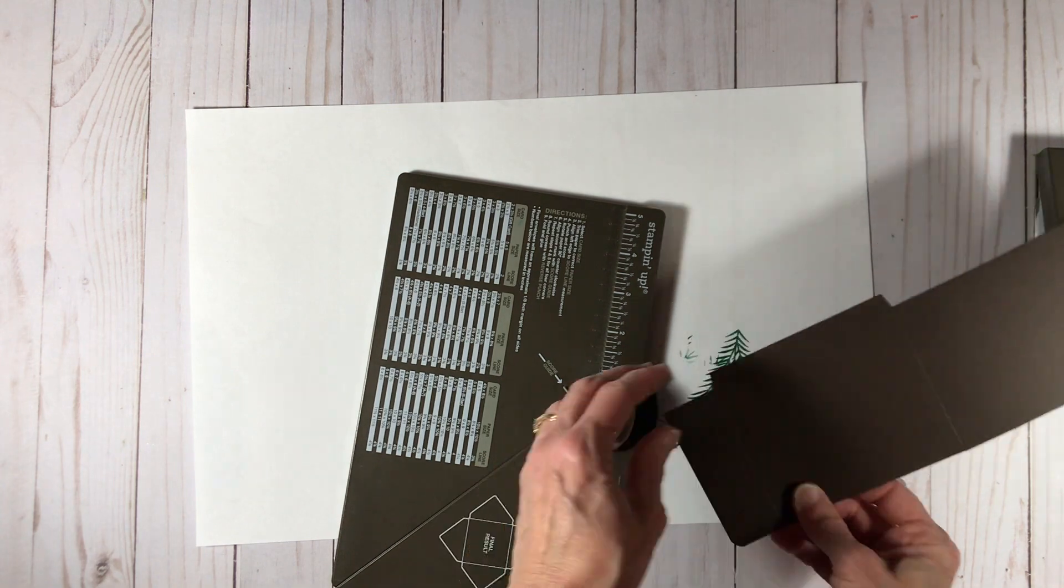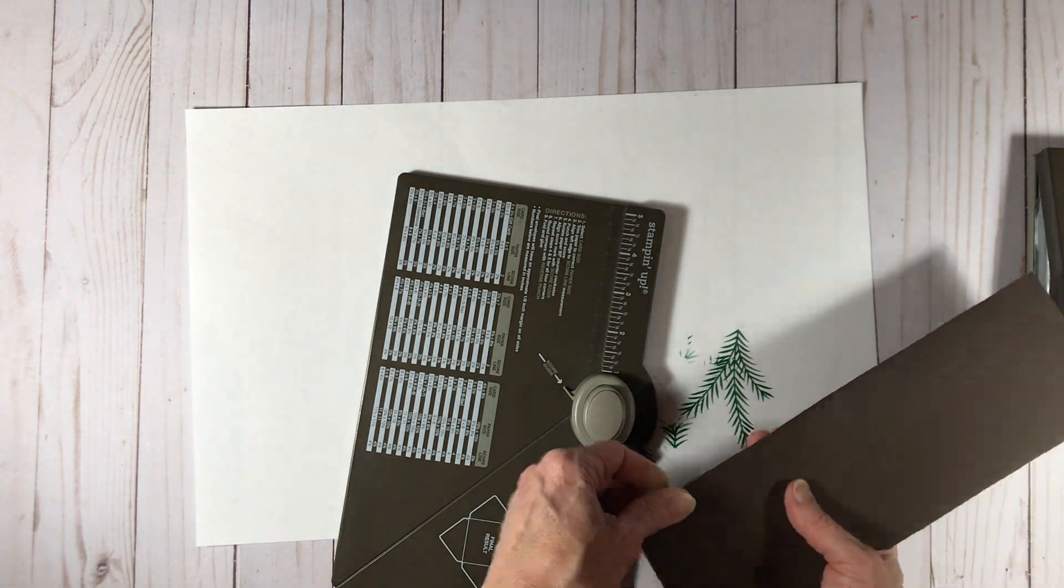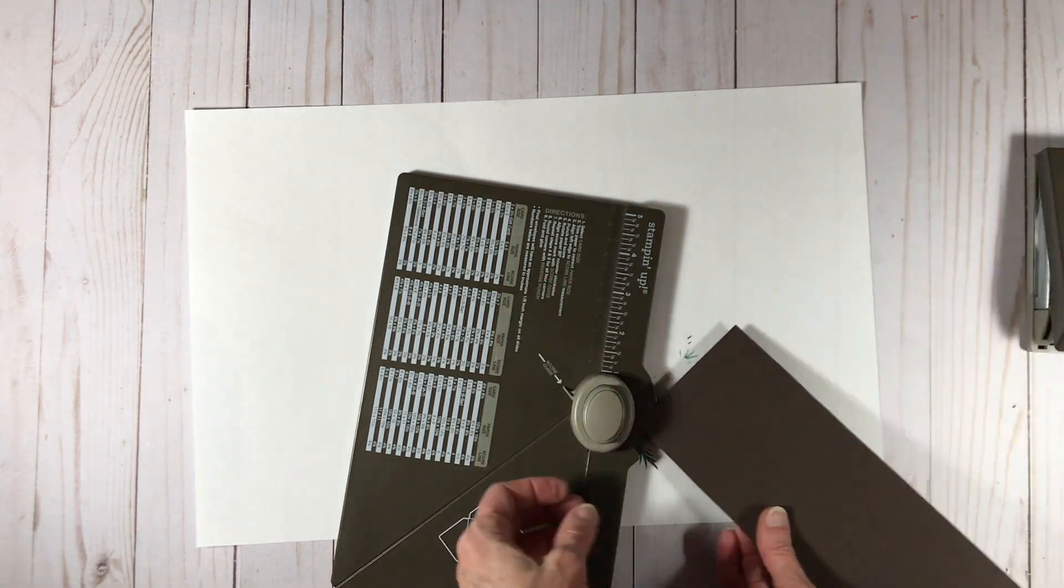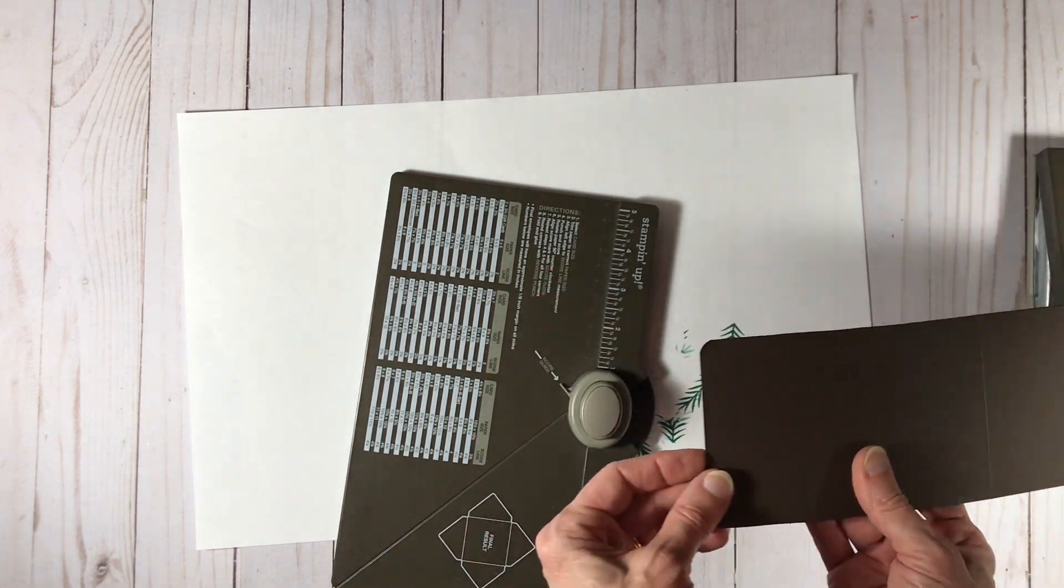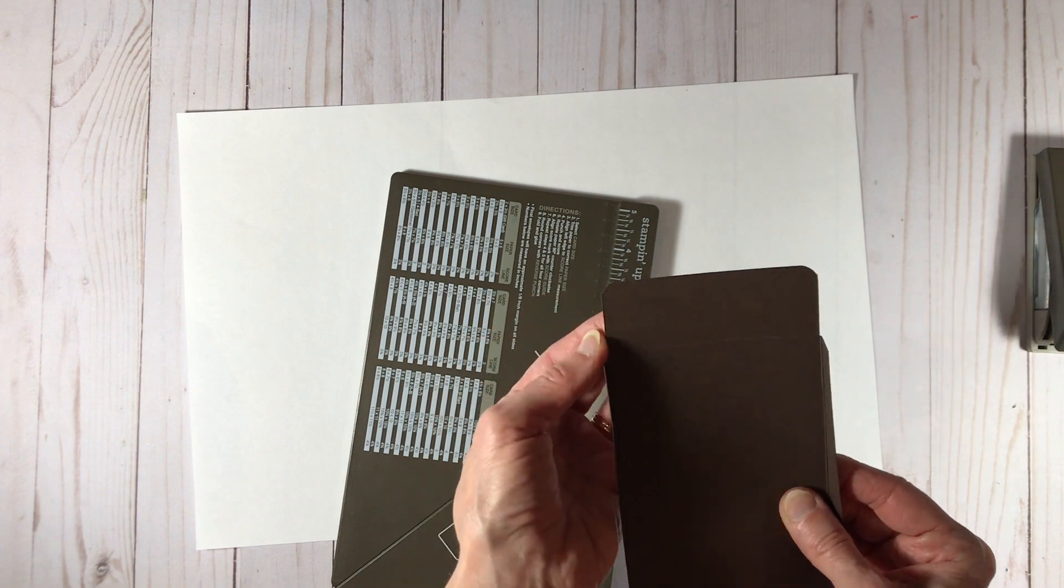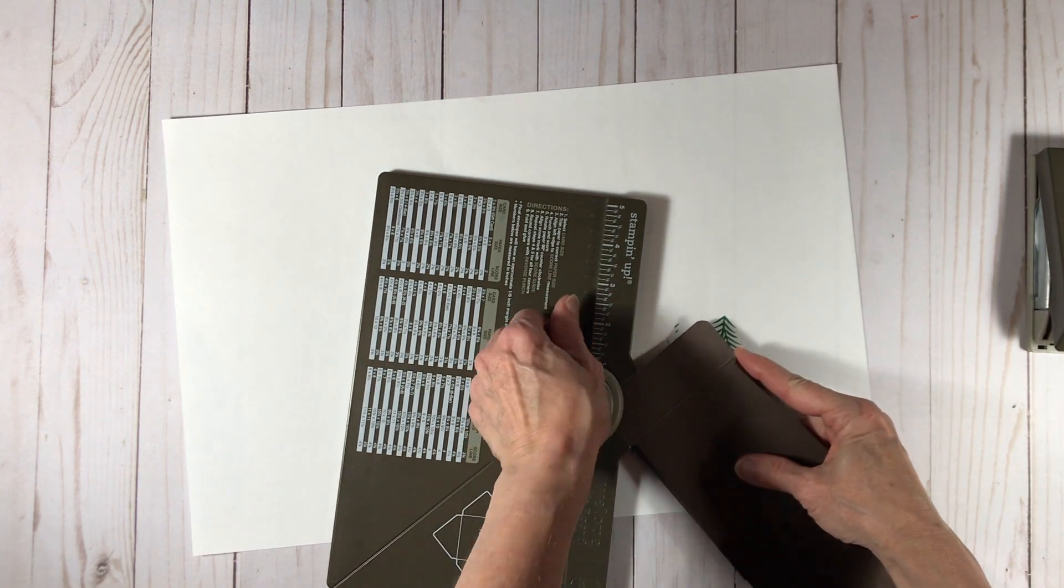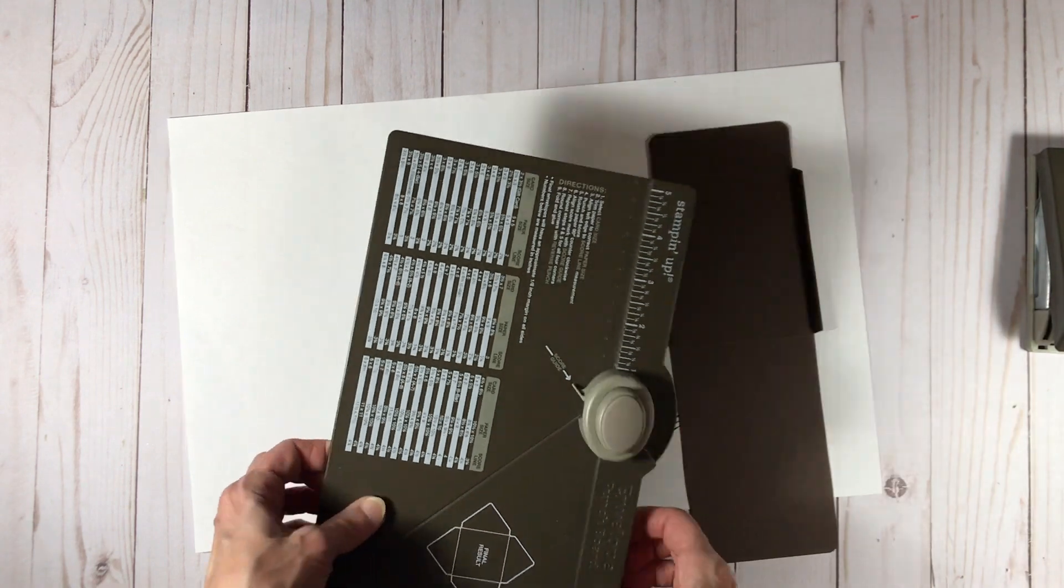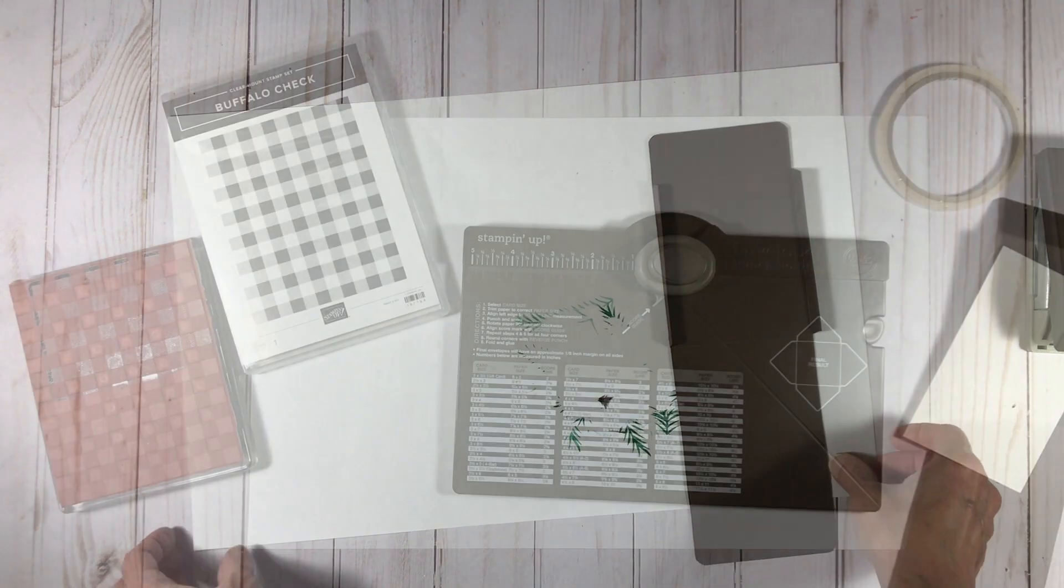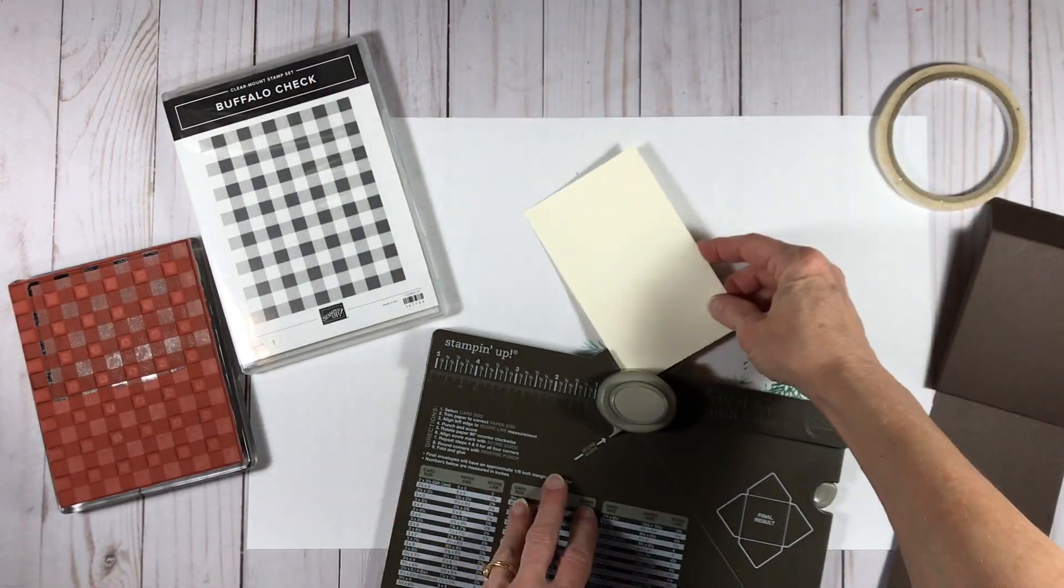Now I'm coming in with my corner rounder, and this is on my envelope punch board but you can use any corner rounder that you want. The detailed trio punch also has a corner rounder on it in case you have that one instead. So now I've just rounded the corners on all four sides and now I'm going to round the corners on my inside vanilla piece.